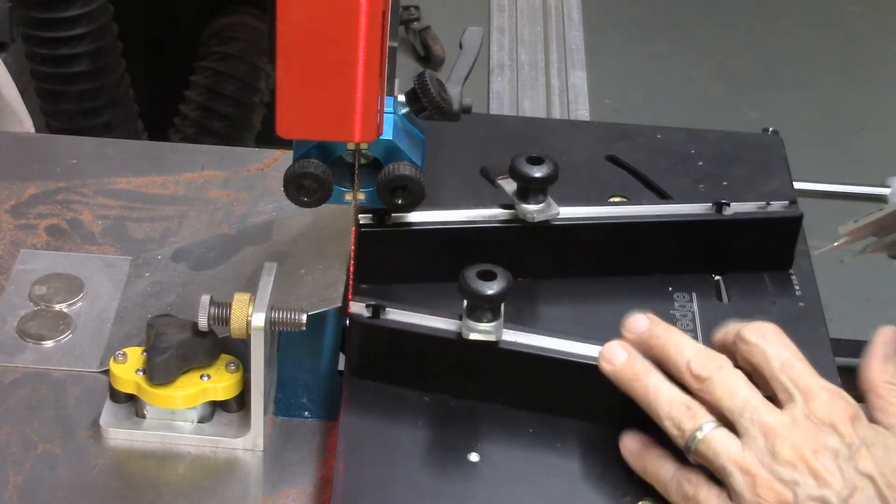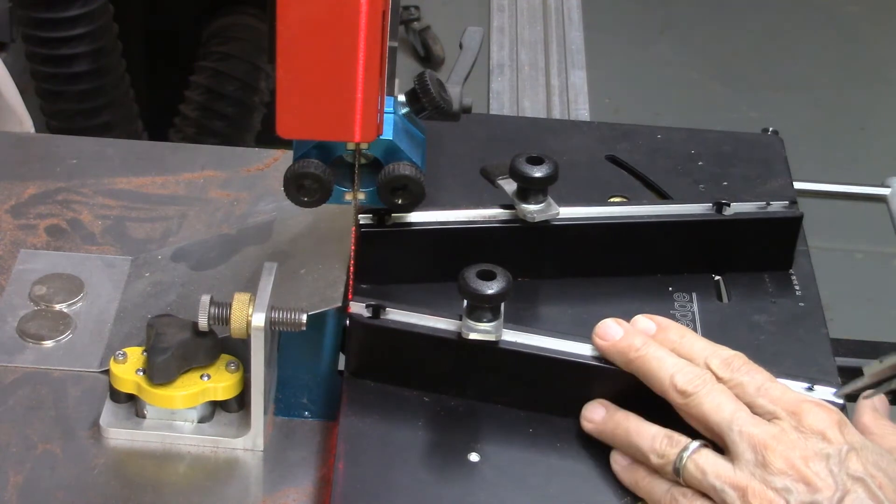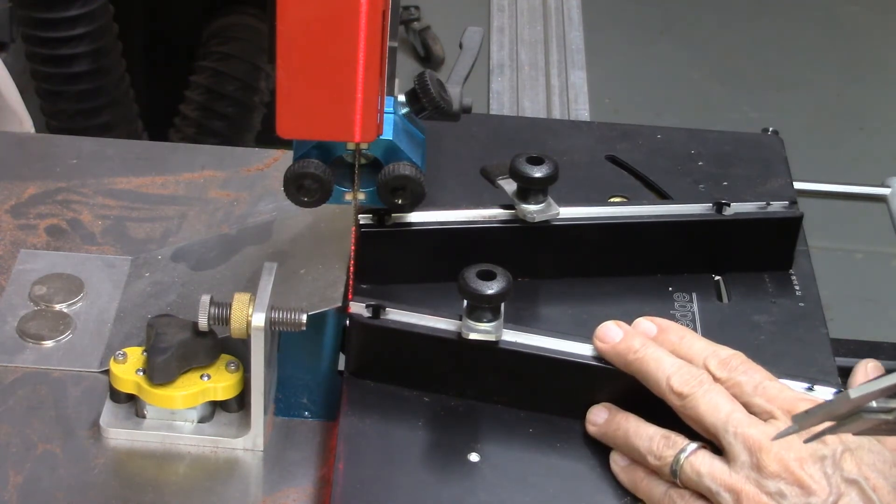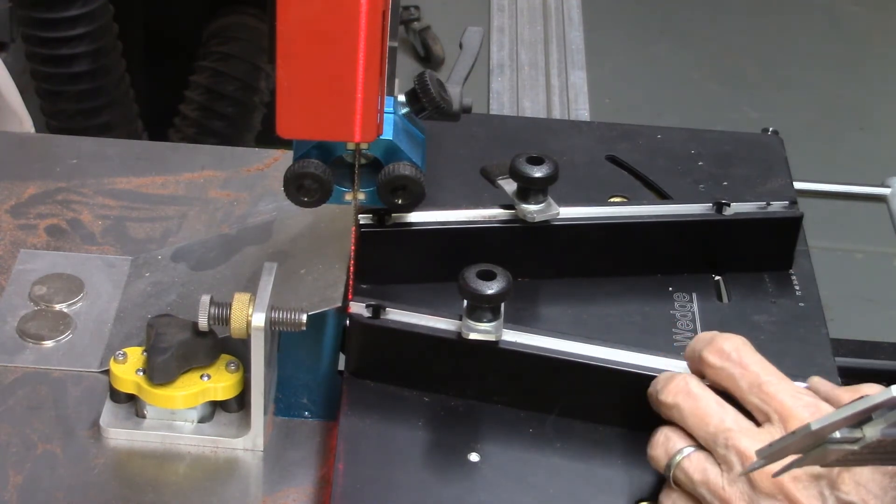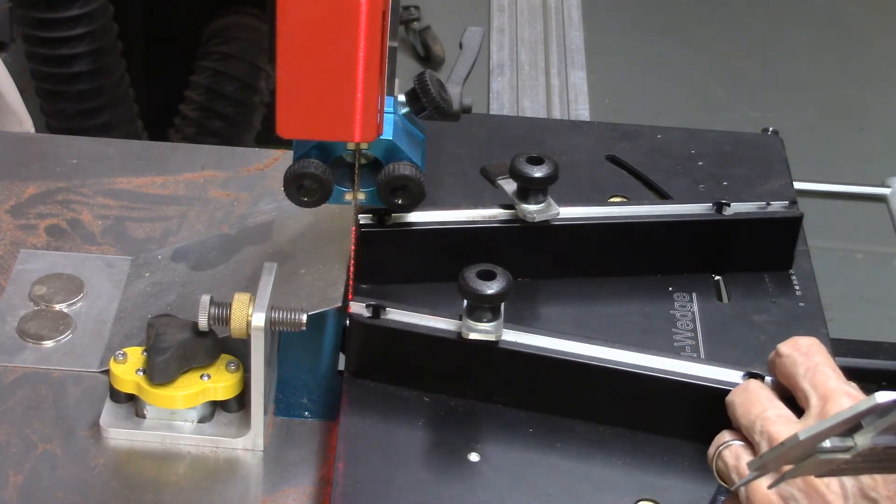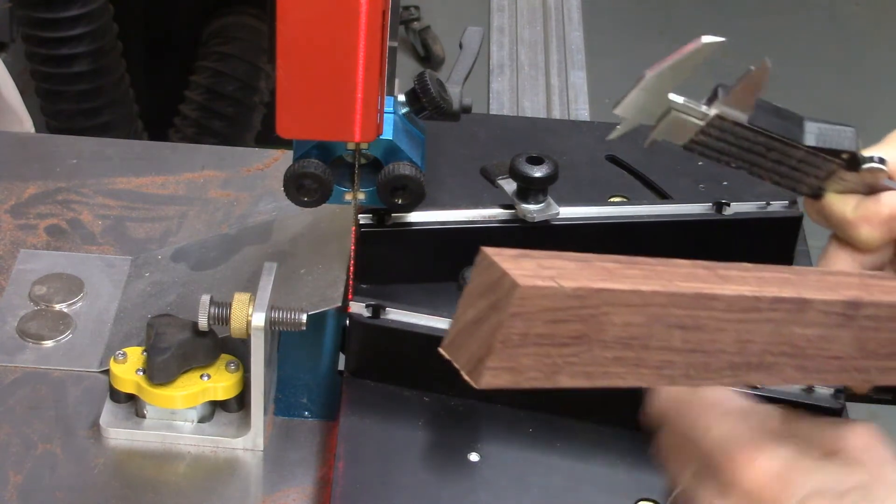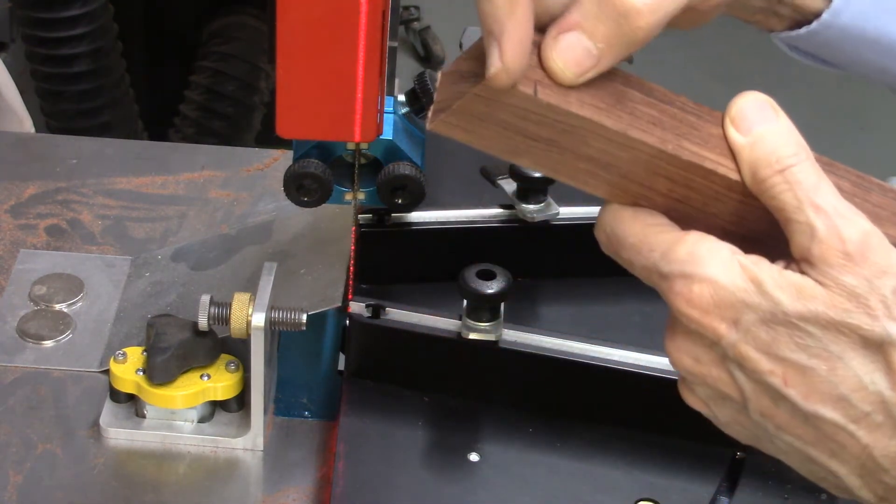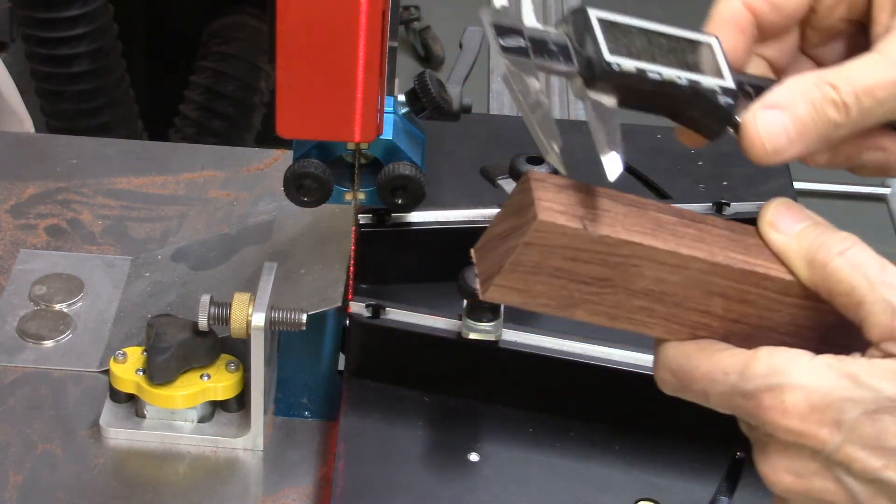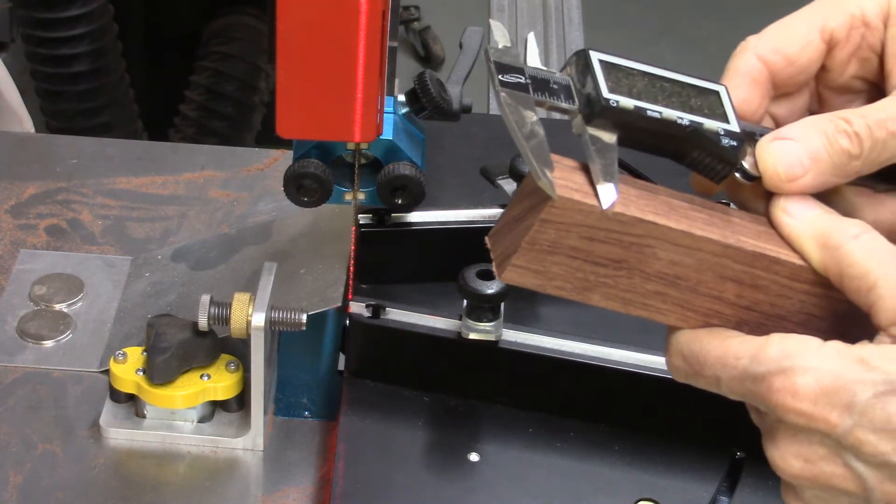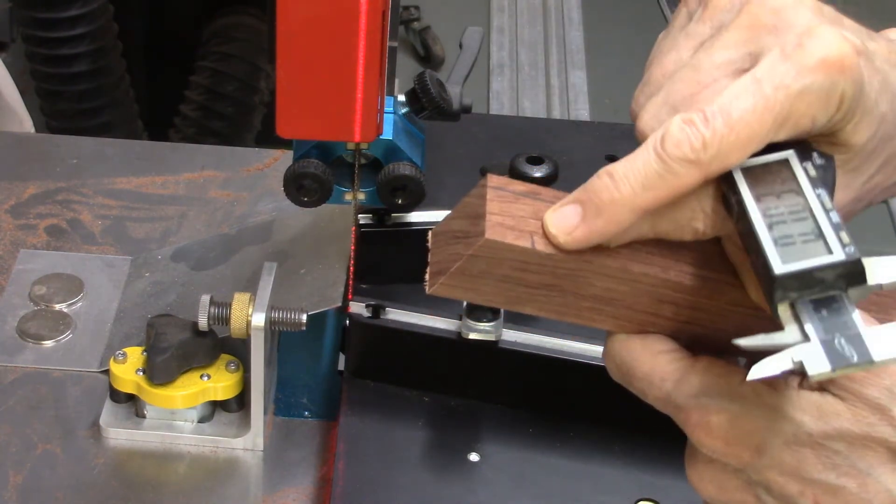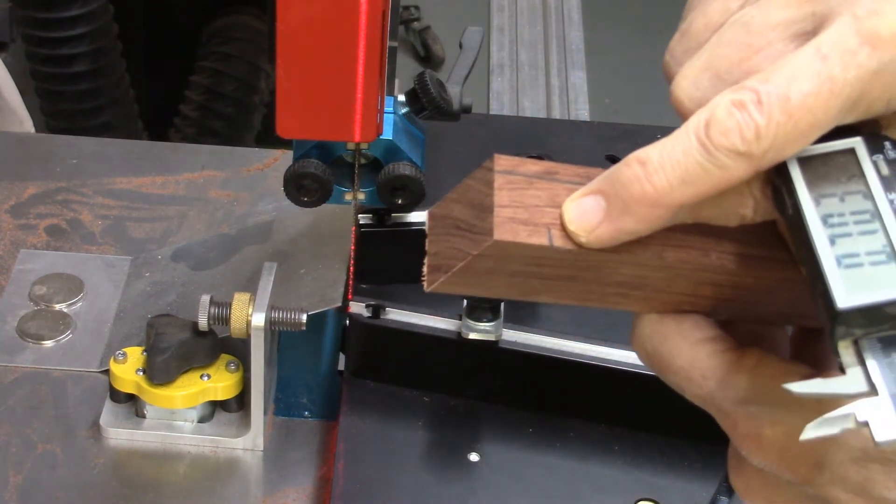I've installed the accu wedge on my bandsaw and now I'm ready to make a segmented disc. The segmented disc is going to have 18 segments per ring and the outside diameter is going to be four inches. So I know based on that calculation the outside length of my segment should be 0.71 inches. So I've taken my board and I put a line at 0.71 inches.